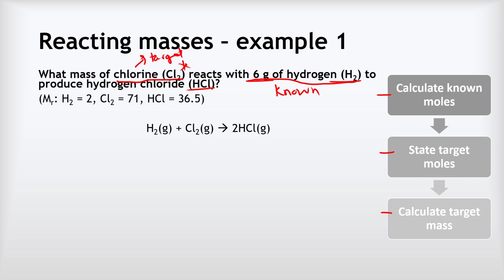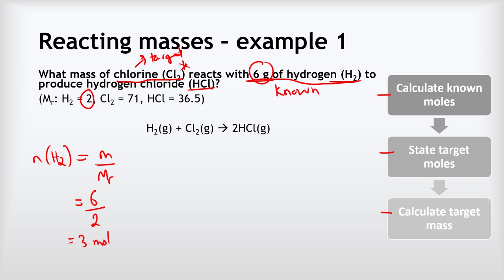We find the number of moles of hydrogen: n(H2) = m / Mr. We know from the question we've got 6 grams of hydrogen, so we do 6 divided by the Mr of hydrogen, which is 2. That gives us 3 moles of hydrogen. That is just the first step — we've calculated our known moles.